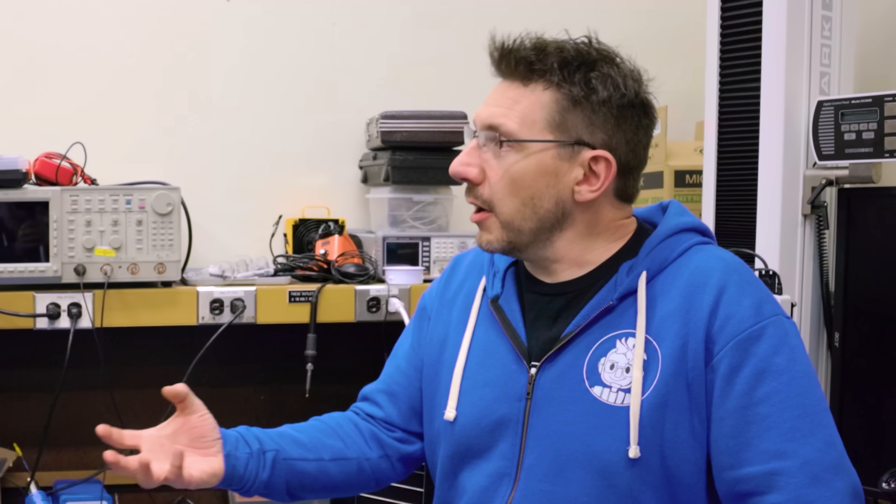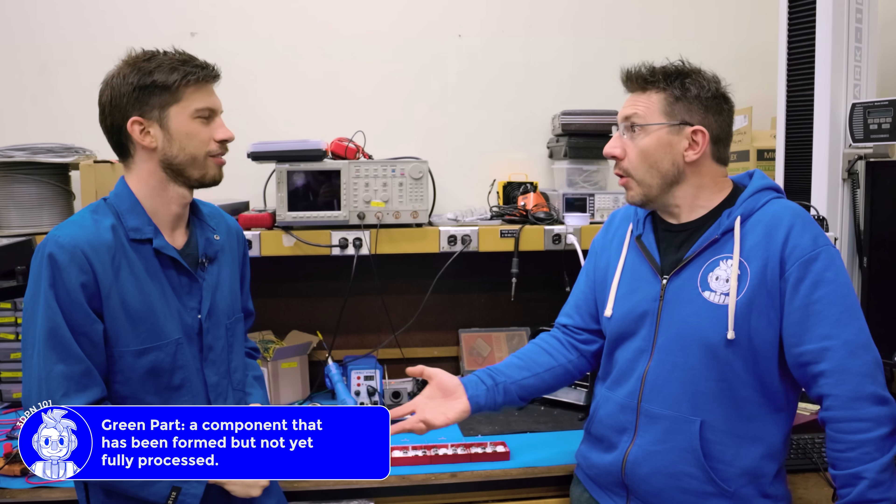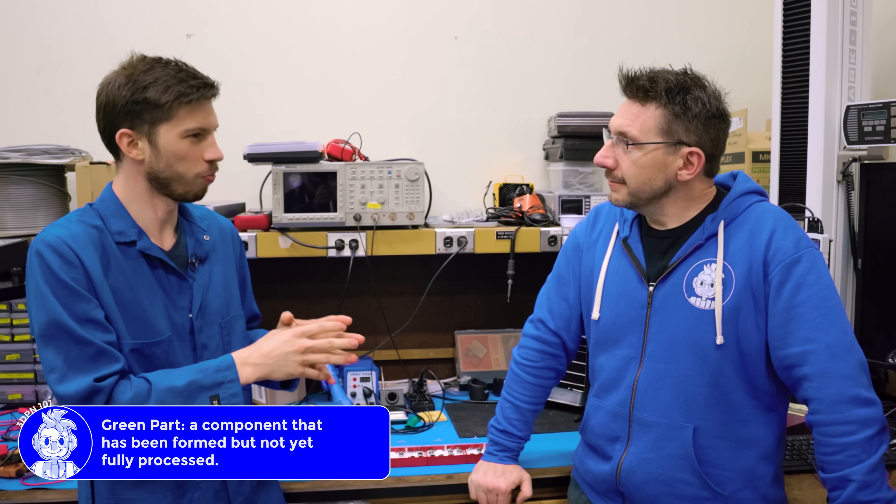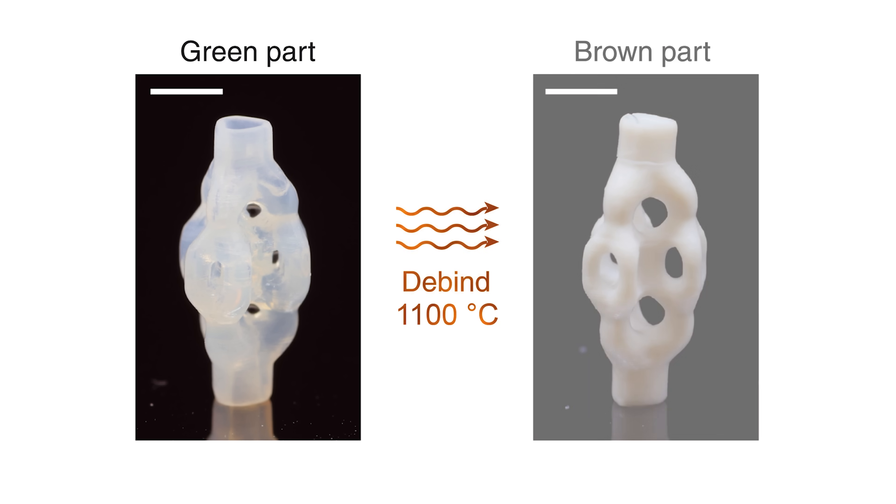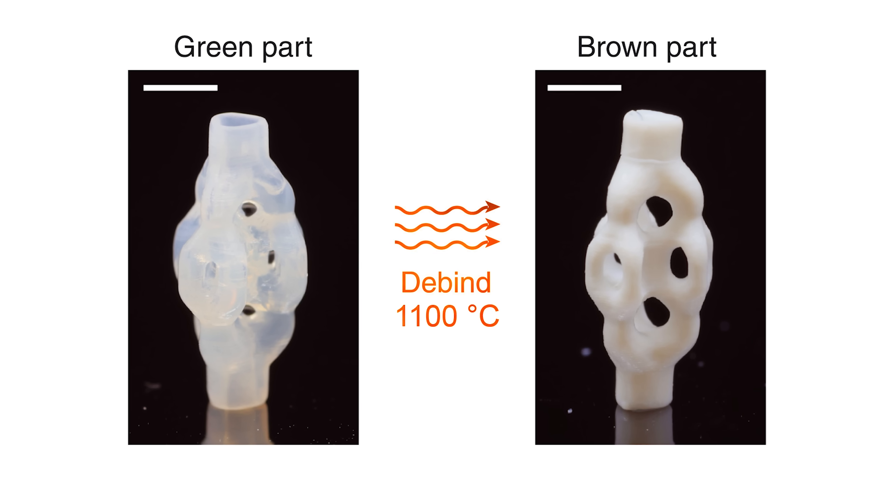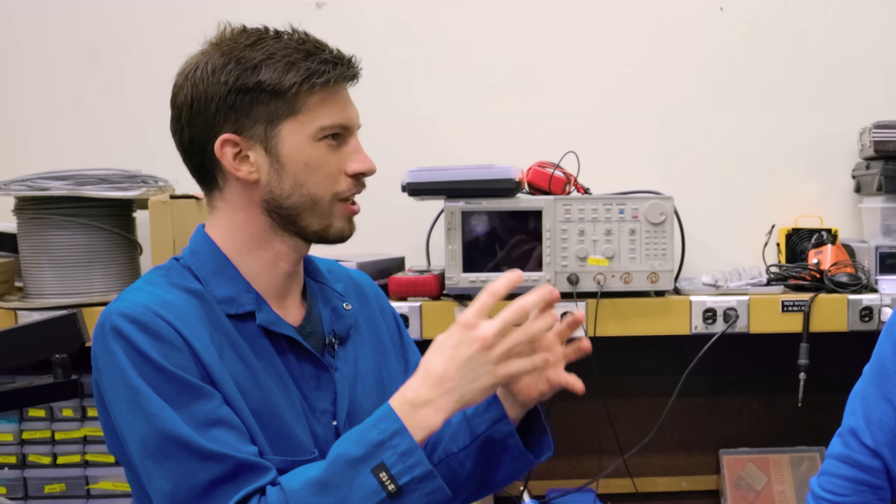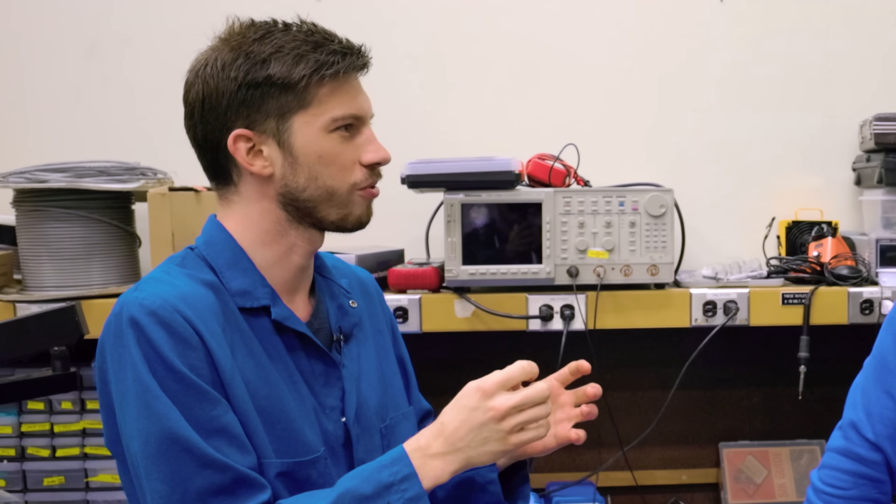Typical processes, a green part is something that then has to be de-binded and sintered. Exactly. Right? Oh, so here too. Yeah. So the next step of the process is to put it in a de-binding oven, which goes up to about 1100 Celsius. We burn out the polymer. So then we're only left with just a very loosely held together structure of silica nanoparticles.